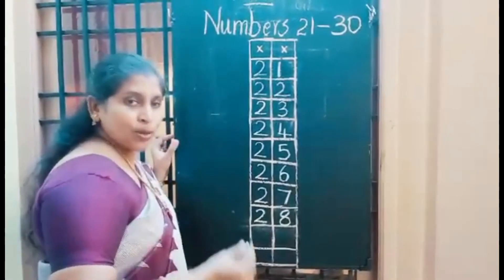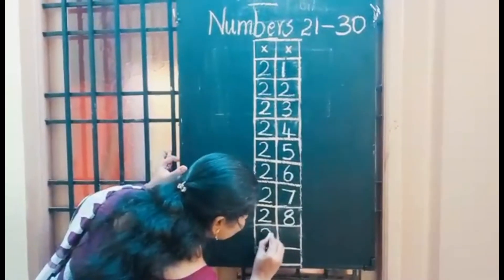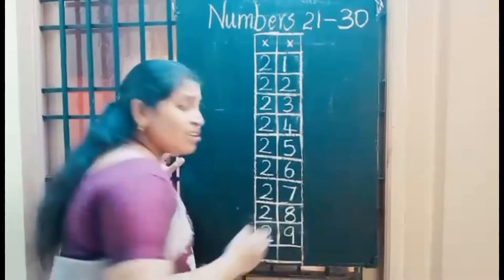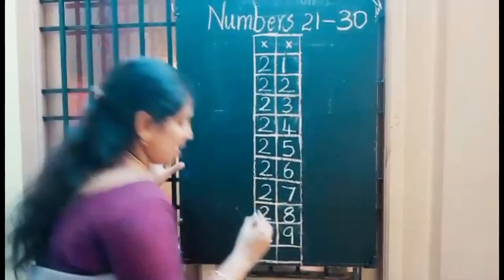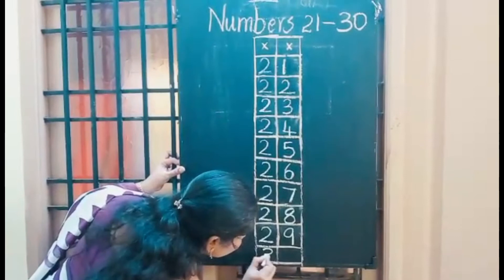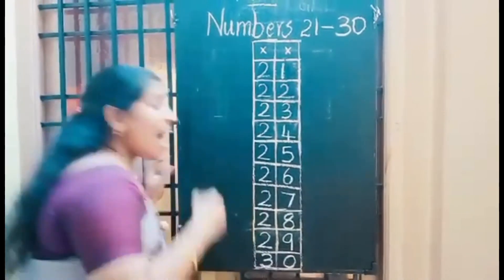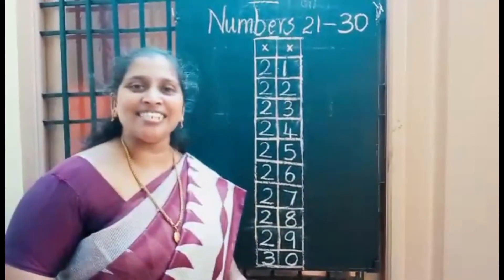2 9, 29. 2 in the 10th place, 9 in the 1's place. 3 0, 30. 3 in the 10th place and 0 in the 1's place. I have completed my writing.